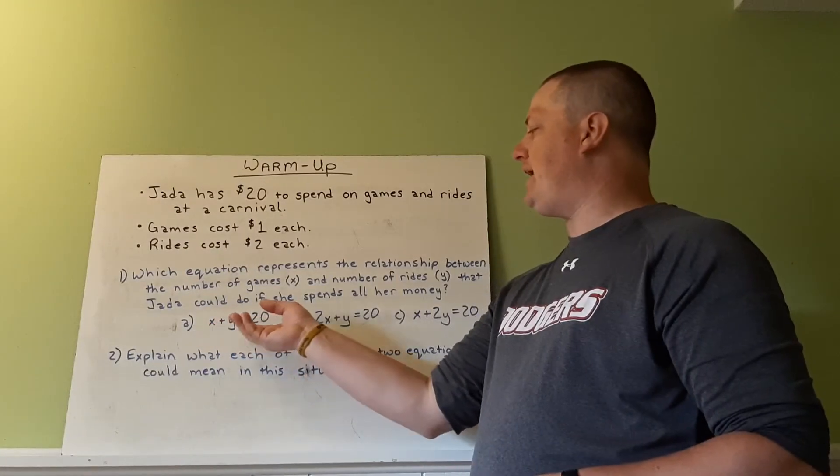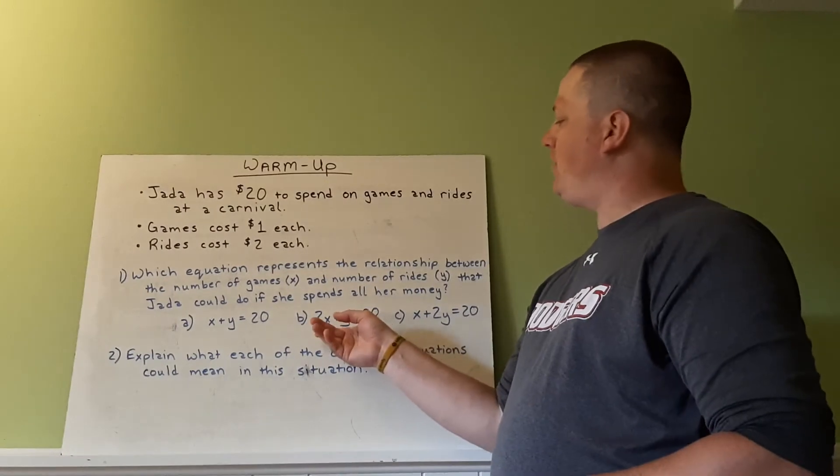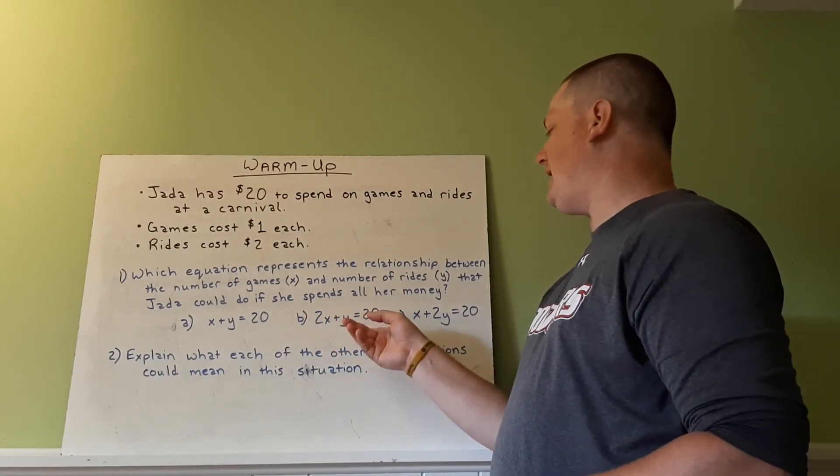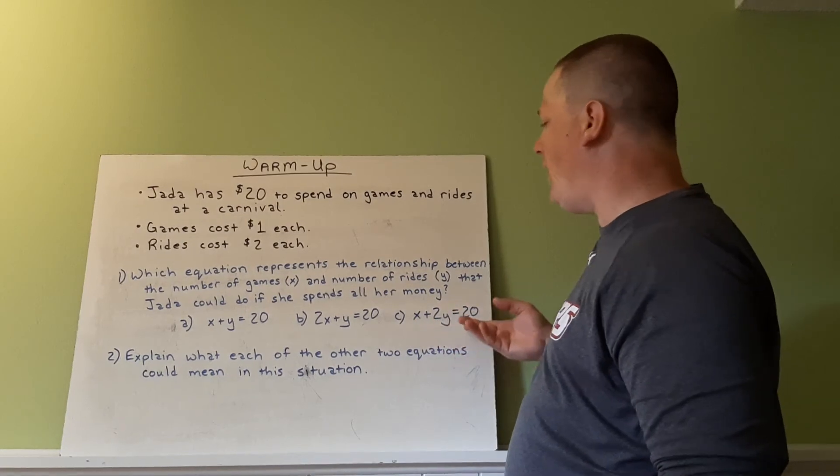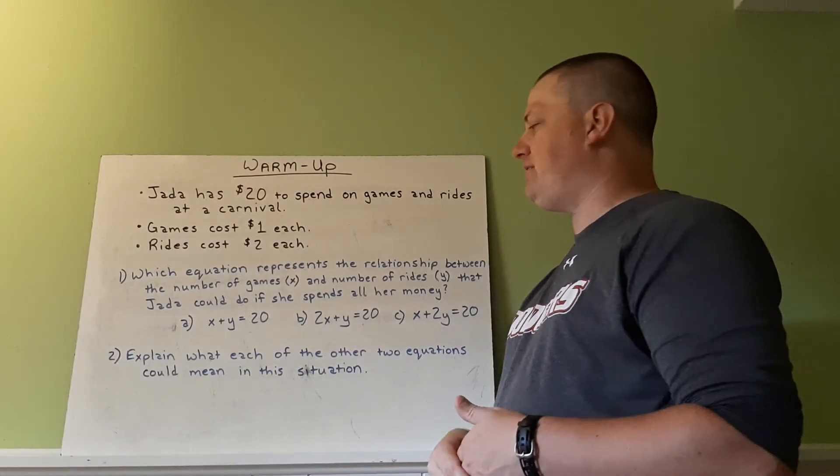You need to pick which one you think best fits that situation. So it could be X plus Y equals 20. It could be 2X plus Y equals 20. Or it could be X plus 2Y equals 20. So which of these three is the one that best fits the situation?